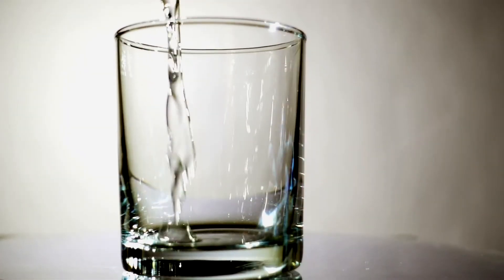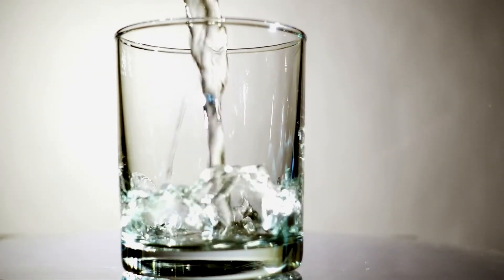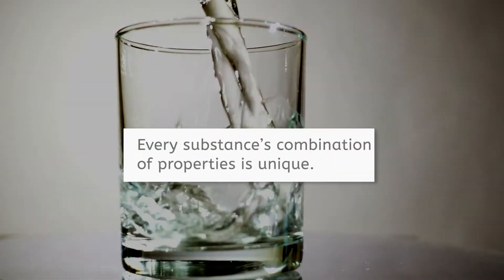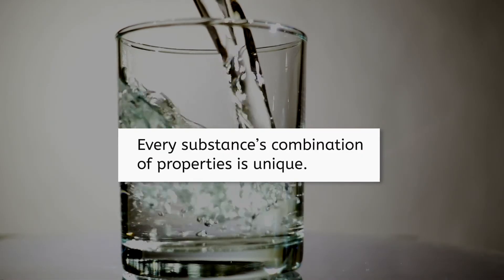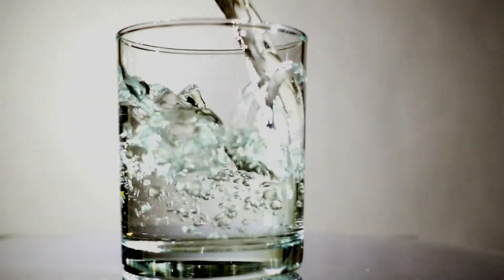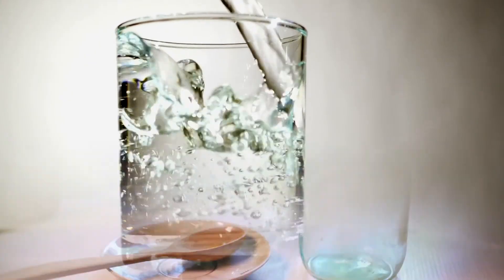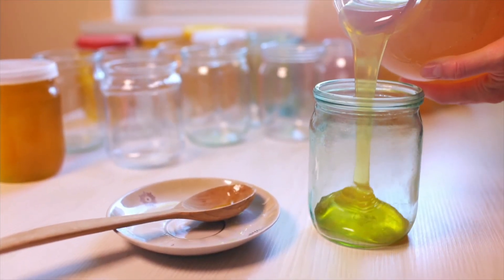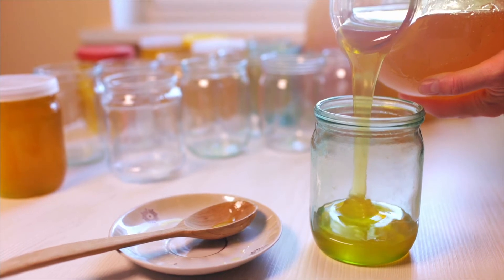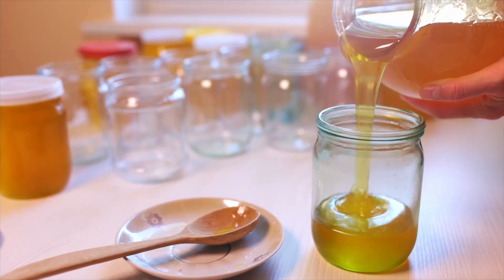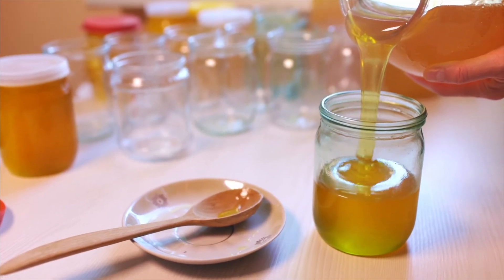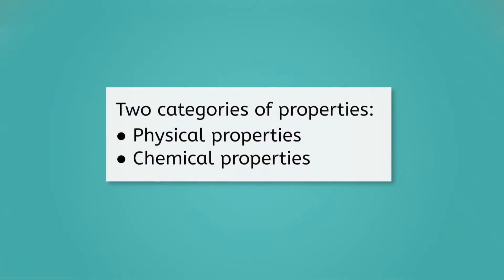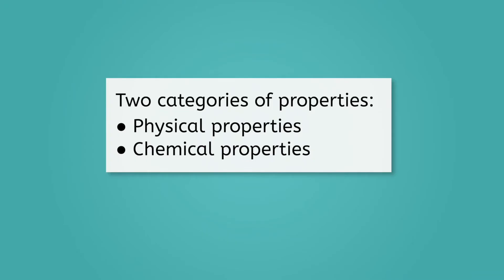When describing a substance, there are a multitude of properties that can be used, and the combination of those properties is unique to every substance. For example, water would have very different properties from this honey, like lower viscosity and a colorless appearance. Some properties can be seen while others must be tested or observed in experiments. All properties fall into one of two categories, physical properties and chemical properties.